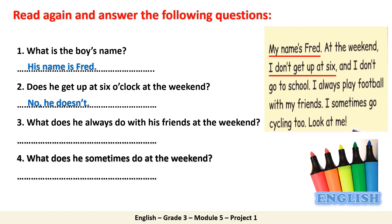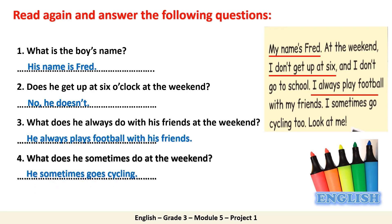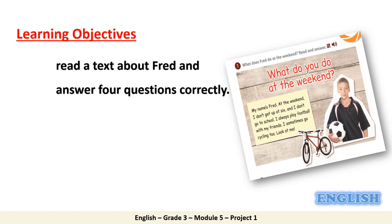Question 3: What does he always do with his friends at the weekend? The answer is: he always plays football with his friends. Question 4: What does he sometimes do at the weekend? He sometimes goes cycling. You did a great job! We have achieved the first objective, which is to read a text about Fred and answer 4 questions correctly.